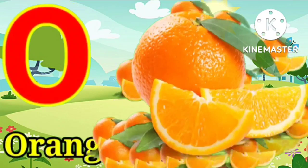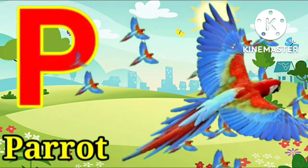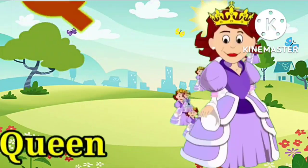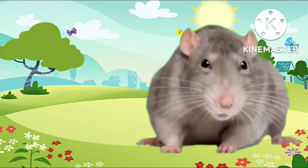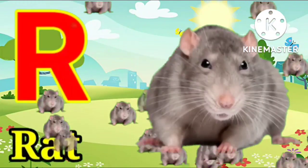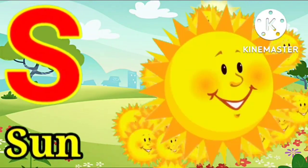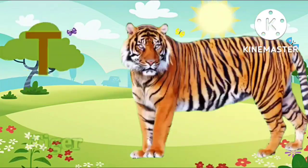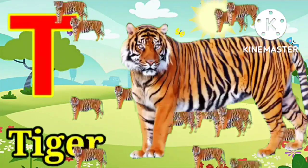N for nest, O for orange, P for pirate, Q for queen, R for right, S for sun, T for tiger.